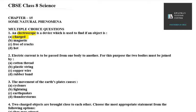Question number 2 is: electric current is to be passed from one body to another. For this purpose, the two bodies must be joined by cotton thread, plastic string, copper wire, or rubber band. So the right option is copper wire. What do we need? We need conducting wire. So what is conducting wire? Copper wire. So the right option is copper wire.